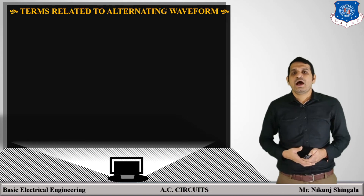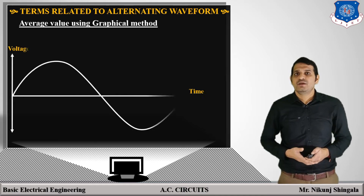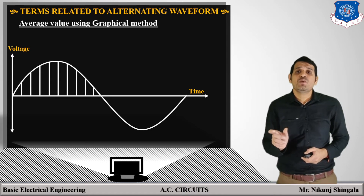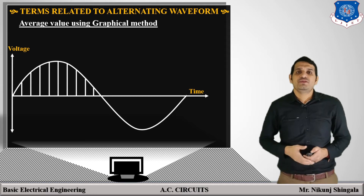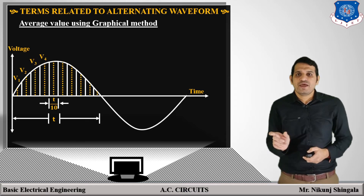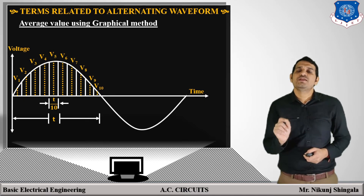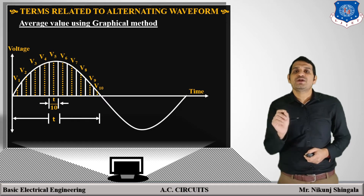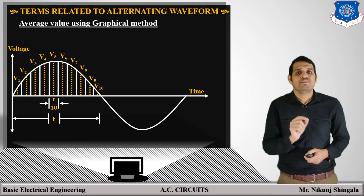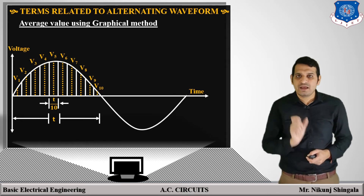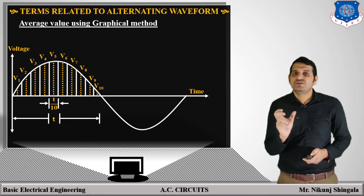Now let us see how to calculate average value using the graphical method. Here there is one alternating voltage — a plot of voltage versus time. The half cycle is divided into equal parts with equal spacing, and the duration of each part is equal. The half cycle duration is T, and in each slot the midpoint is taken, known as the mid-ordinate, which is the instantaneous value. Here there are 10 instantaneous values in 10 different slots — V1, V2, V3, V4, V5 up to V10 — and duration of each slot is T/10, where T is the duration of the half cycle.